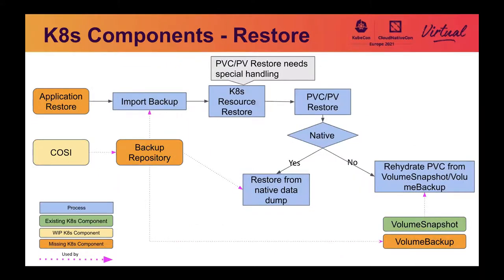In the restore workflow, a similar picture applies. An application backup repository serves as the source of the backup to be pulled from. And there's COSI, which is a generic interface to all the object store providers — it is in progress. Application restore plays a role of orchestrating the restoration process at the application level. Volume backup again falls into the same box as volume snapshot.